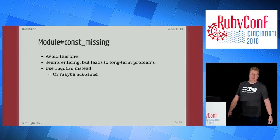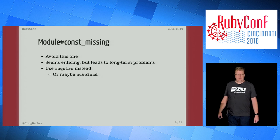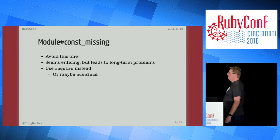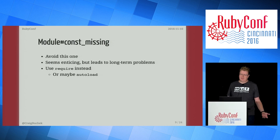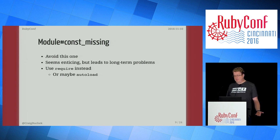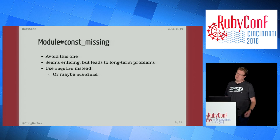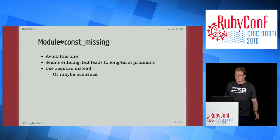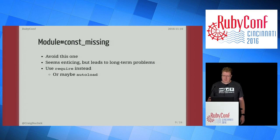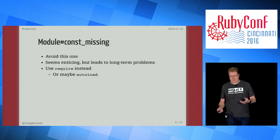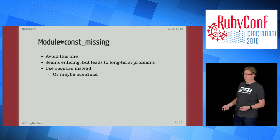You've also got const_missing, which is defined on Module. Generally avoid this one — it seems pretty enticing, but it leads to some long-term problems that I don't find worth it. I would prefer to just use require or maybe autoload. Rails likes to use this for autoloading. Remember that class names are constants, so if you're trying to find classes automatically, const_missing is what you would be using.